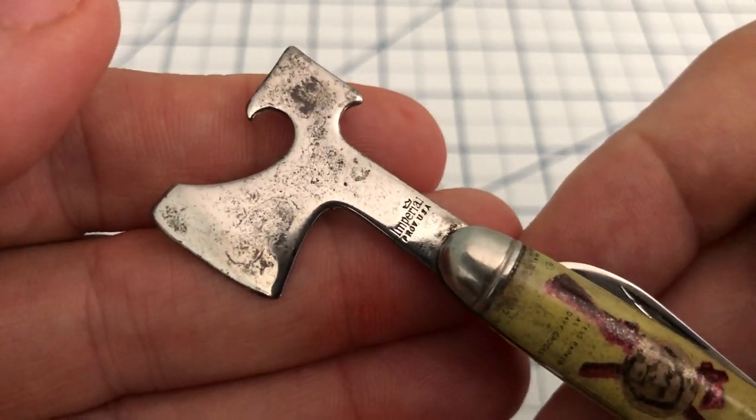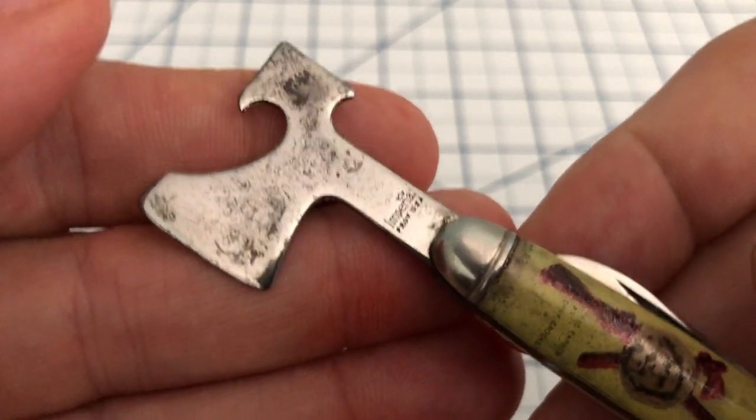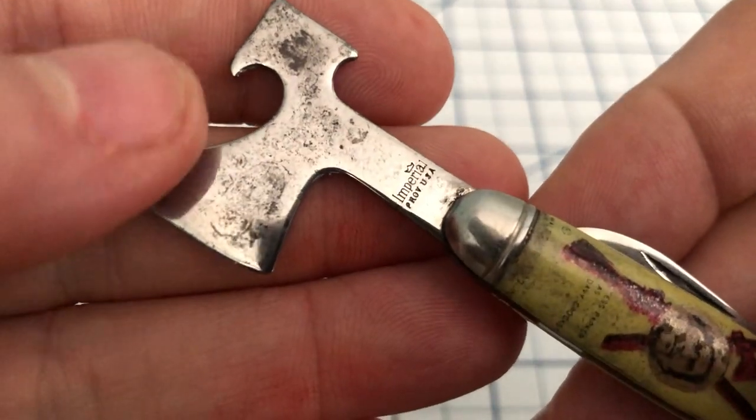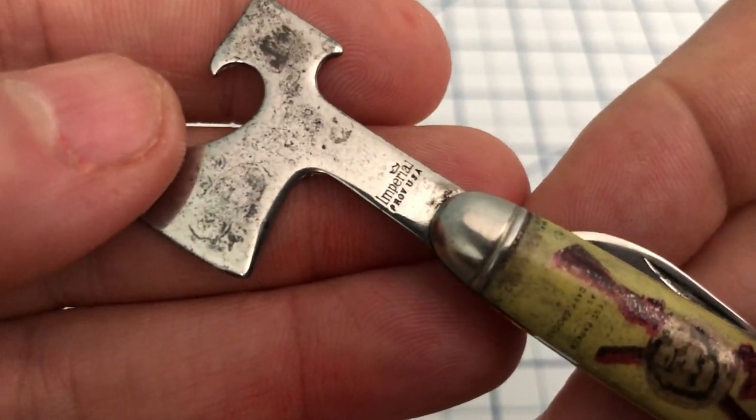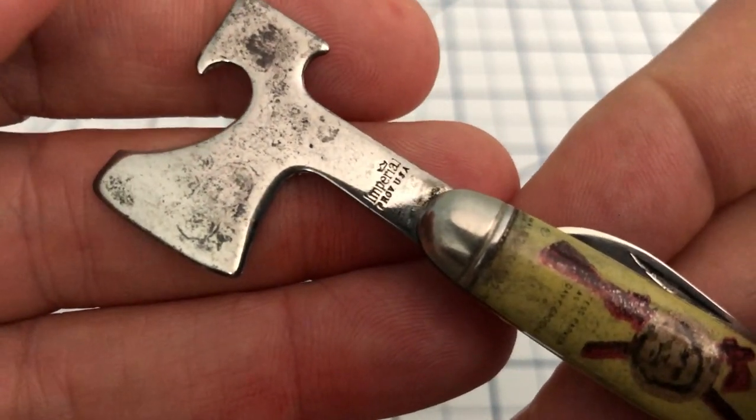If anybody has information about this knife that they want to share, please drop it in a comment below. I'd love to know about it. It says Imperial, Prov, for Providence, Rhode Island, USA.